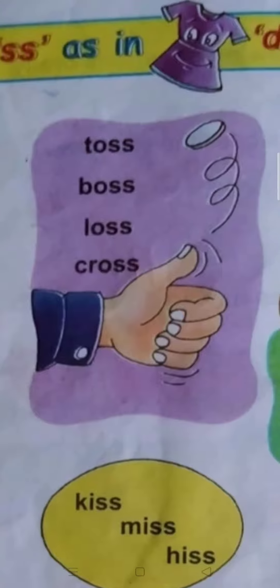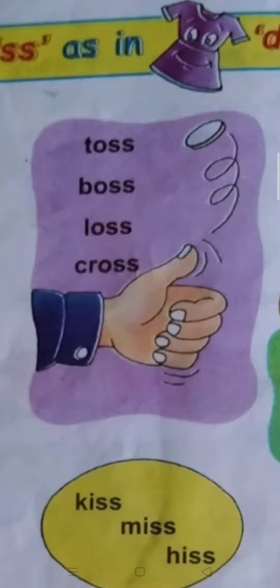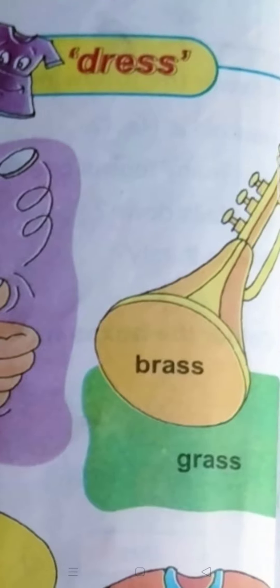T O double S — toss. B O double S — boss. L O double S — loss. C R O double S — cross. B R A double S — brass. G R A double S — grass.